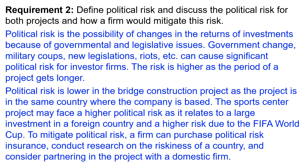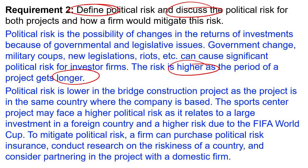Requirement 2 asks us to define political risk and discuss it for both projects. Political risk is the possibility of changes in the returns of investment due to governmental and legislative issues. Government changes, military coups, new legislation, rights, etc., can cause significant political risk for investor firms. The risk is higher as the period of the project gets longer. Political risk is lower for the bridge construction project as the project is in the same country where the company is based. The sports center project may face higher political risk as it involves a large investment in a foreign country and relates to the FIFA World Cup.